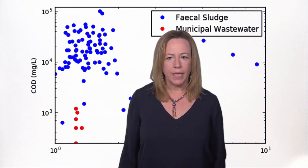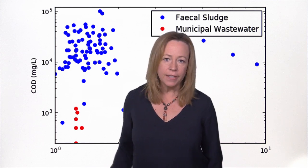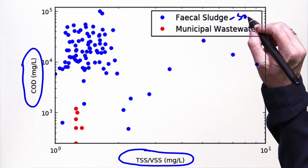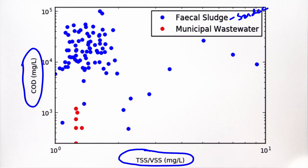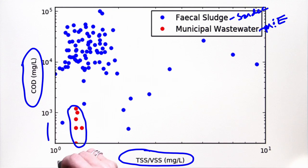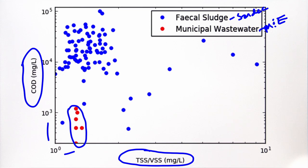What does all this variability mean in terms of quantification? This figure illustrates COD values plotted against total suspended solids to volatile suspended solids for fecal sludge analytical results from some of Sandec's research studies. In comparison, it also shows values for influent of wastewater treatment plants taken from the Metcalf and Eddy reference. Note that it is on a logarithmic scale. Fecal sludge is up to two orders of magnitude more concentrated than wastewater, in addition to being highly variable. The same technologies will have widely ranging characteristics compared to each other, and areas within the same city will also have widely ranging characteristics.